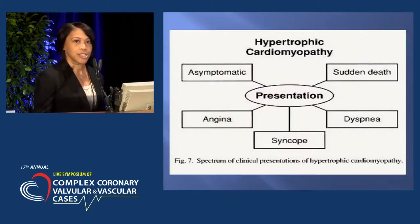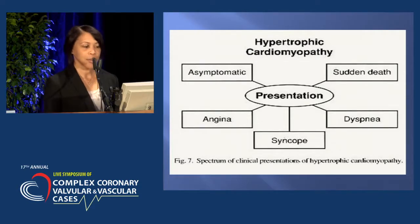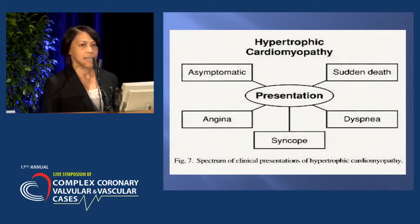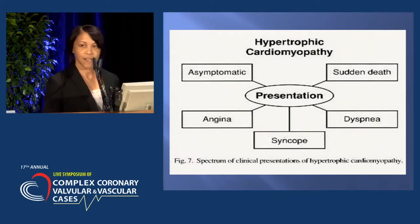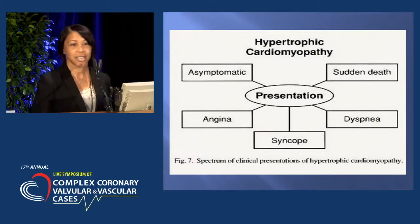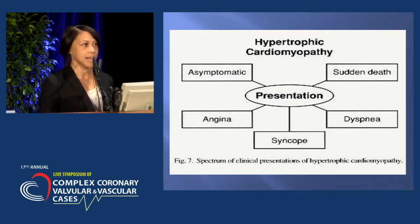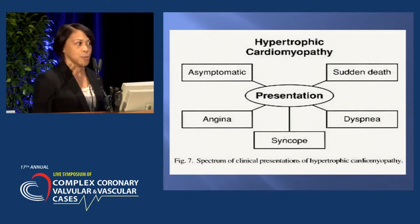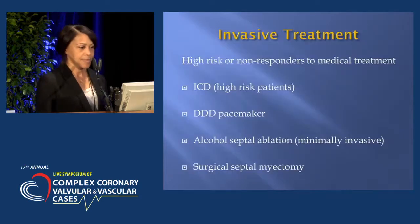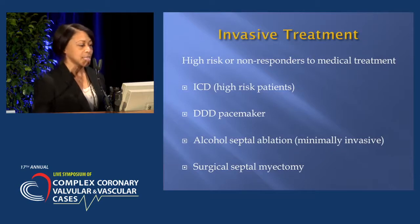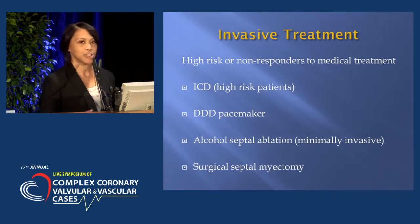Patients may present with cardiomyopathy in various ways — dyspnea, syncope, angina, or they may be asymptomatic, and some may present with sudden death. If a patient comes in with sudden death, it's something to consider that they may have had hypertrophic cardiomyopathy. Invasive treatment options include ICD, which is reserved for high-risk patients for primary prevention and to prevent sudden cardiac death.